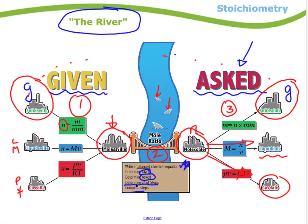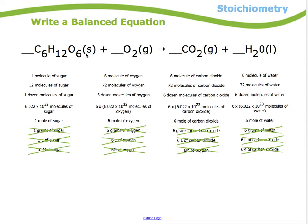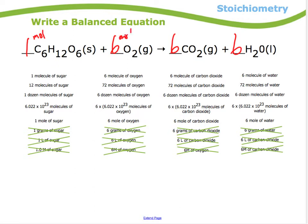First, let's go through determining a balanced chemical equation. Here I have a chemical equation: one molecule of sugar reacts with six molecules of oxygen to produce six molecules of carbon dioxide and six molecules of water. It could be molecules, a dozen molecules — usually we use moles. So one mole of sugar reacts with six moles of oxygen to produce six moles of carbon dioxide and six moles of water.